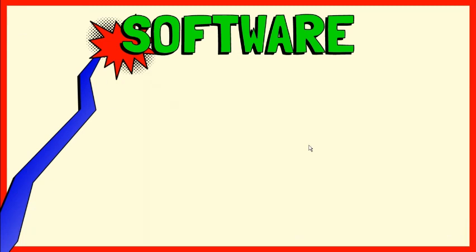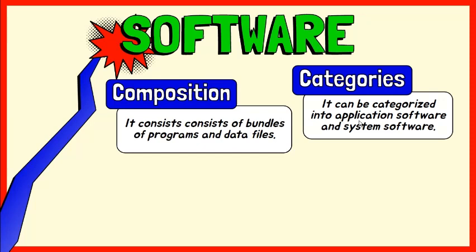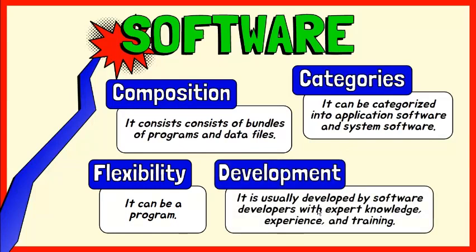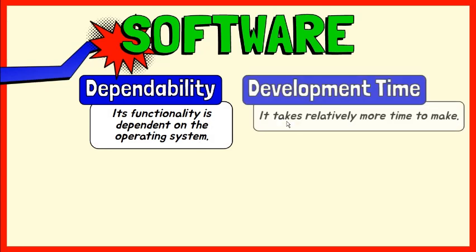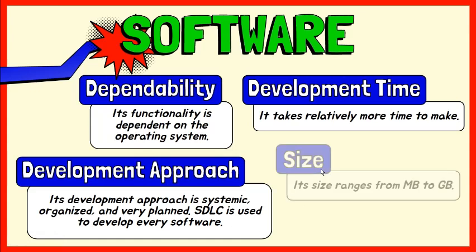Software consists of bundles of programs and data files. It can be categorized into application software and system software. Software can be a program. It is usually developed by software developers who have expert knowledge, experience, and training. Software functionality is dependent on the operating system. It takes relatively more time to make. Software development approach is systematic, organized, and very planned. SDLC is used to develop every software. The size of software ranges from megabytes to gigabytes.